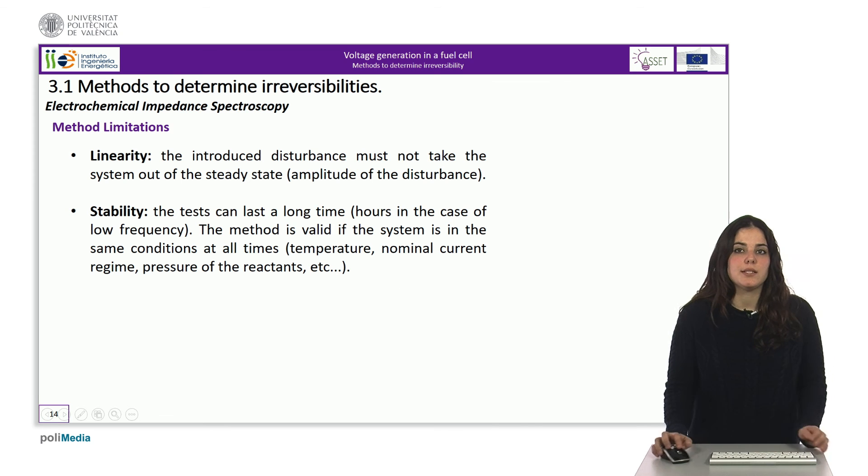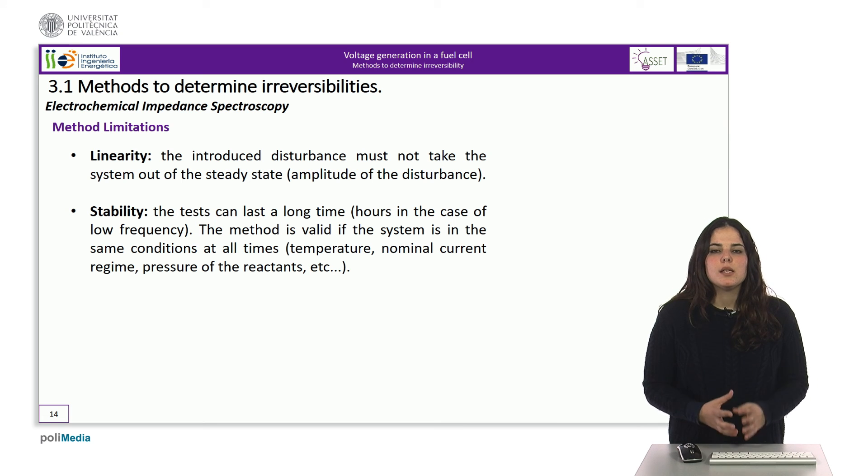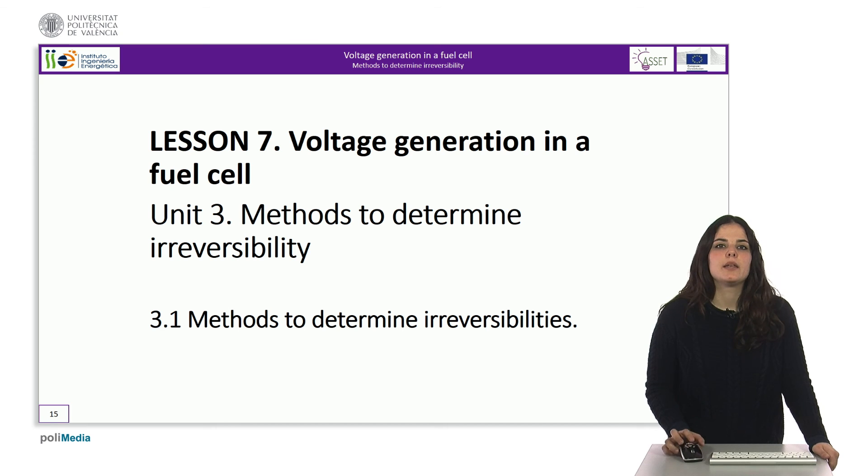However, when this method is used, its limitations must be taken into account. Firstly, the amplitude of the disturbance current must not bring the system out of the steady state. In other words, the amplitude must be much smaller than the current delivered by the source. In addition, the test must be performed under the same conditions of current density, temperature, presence of reactants, etc., to be valid. This is especially difficult when testing at very low frequency because the testing times are very long. With this, we conclude the unit about the different existing methods to determine irreversibilities in the voltage generation in a fuel cell. Thank you very much for your attention.